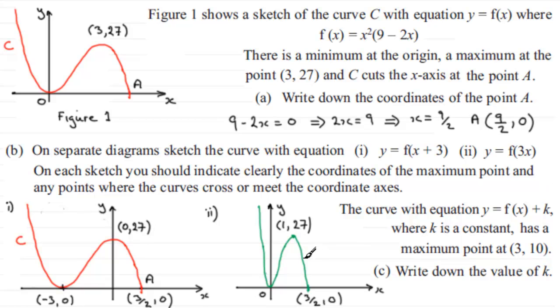Finally in part c, we're told that we have the curve with equation y equals f of x plus k, where k is a constant, and it has a maximum point at (3, 10). We've got to write down the value of k. Let's put that graph back. If it has a maximum point at (3, 10)—remember this graph had a maximum point at (3, 27)—what this transformation does is it translates or shifts the graph up or down by k units.